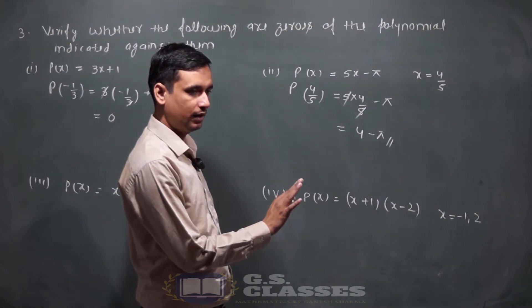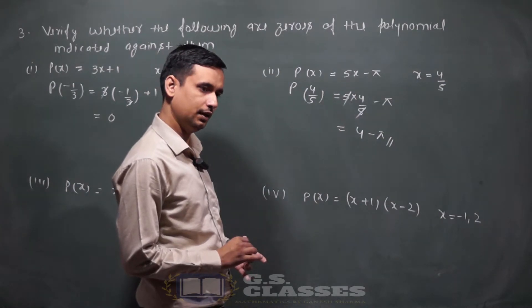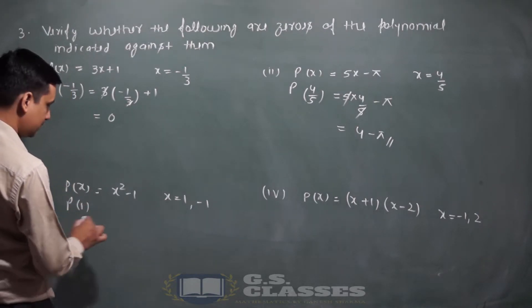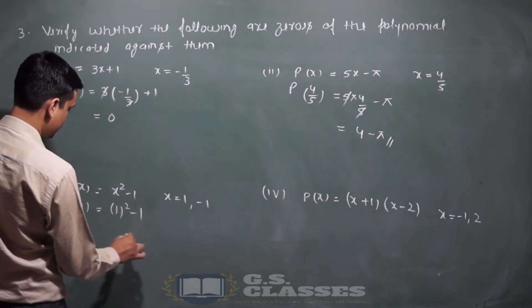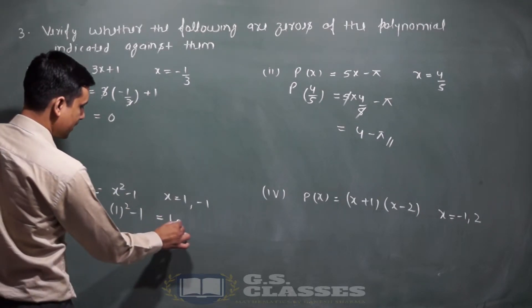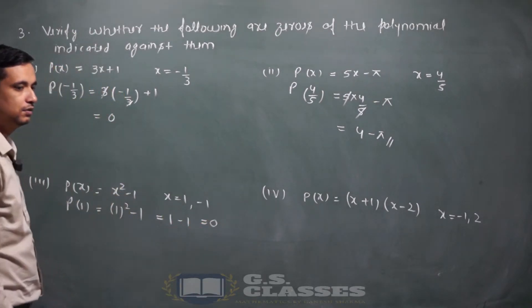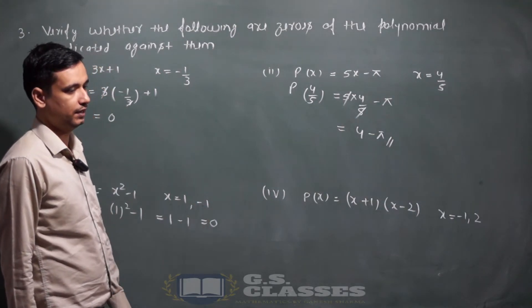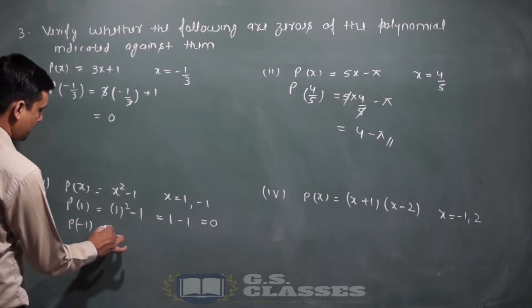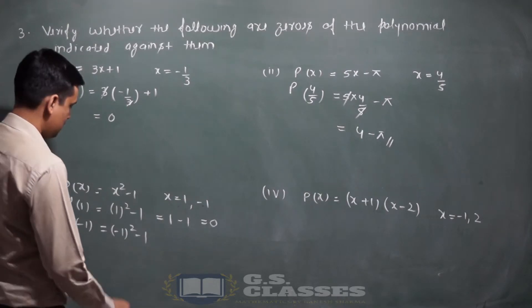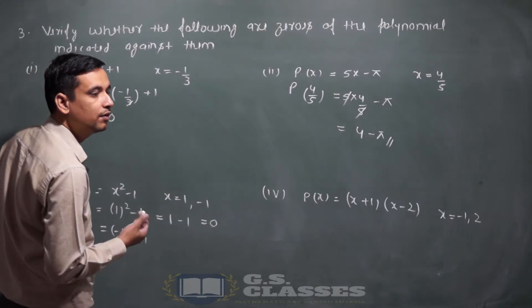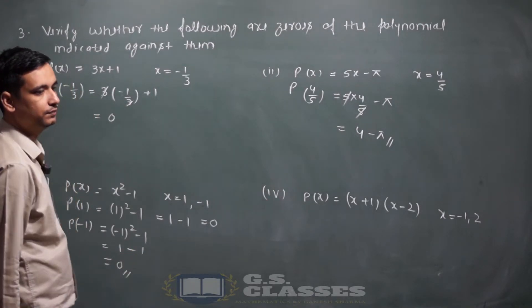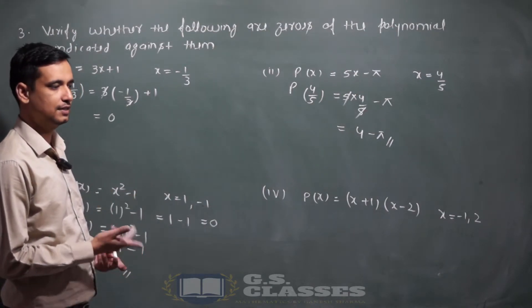यहाँ Pi की value put करने की कोई जरूरत नहीं। p(x) = 5x minus Pi, x = 4/5: 5 into (4/5) minus Pi → 5 से 5 cancel → answer है 4 minus Pi। x=1 put करने पर: 1 का square minus 1 = 1 minus 1 = 0।